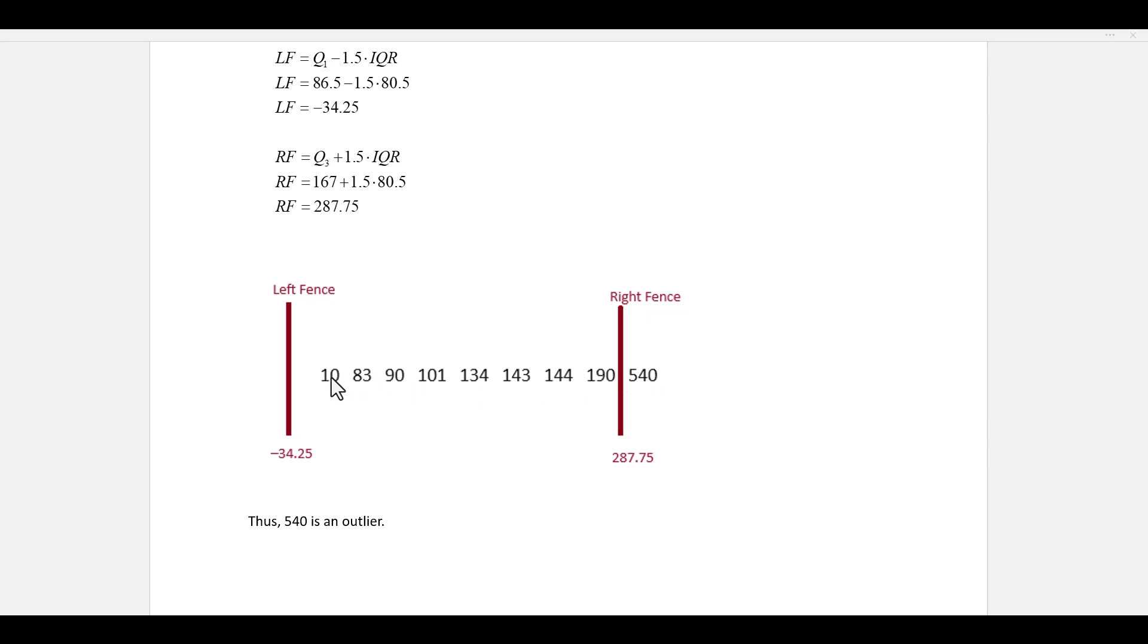Thus, the numbers from 10 to 190 are valid data values. 540 is on the outside of the fence. Therefore, 540 is the outlier. And as I mentioned before, outliers are typically excluded from the data set because they tend to distort it and produce false patterns.